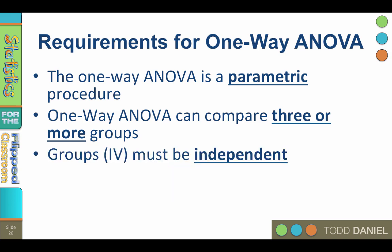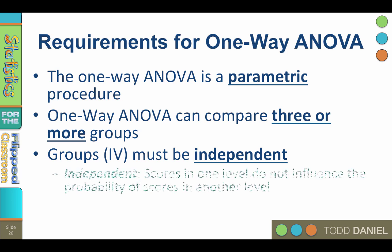The independent variable groups must be independent. Independent means that the scores at one level do not influence the probability of scores in another level, so the groups are not influencing one another. The samples should not be related. If the samples are related, then you would use a repeated measures ANOVA.